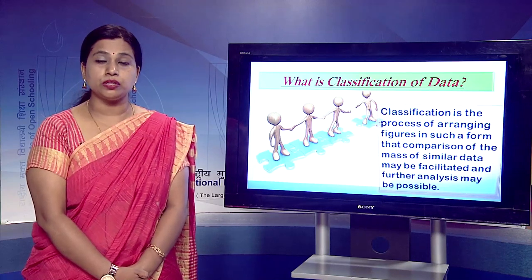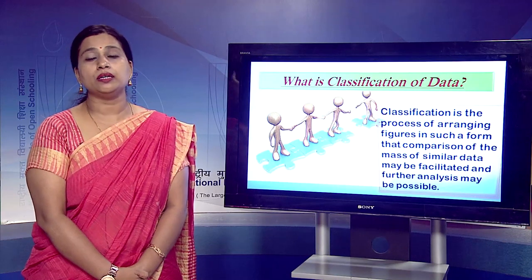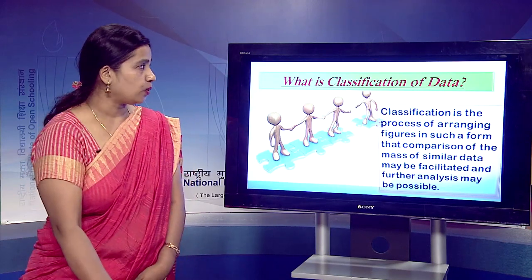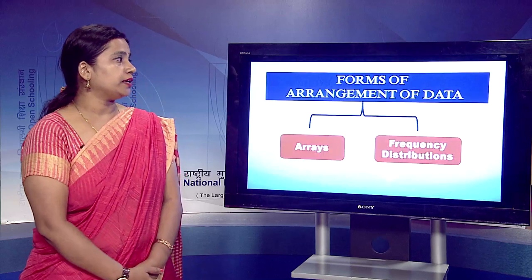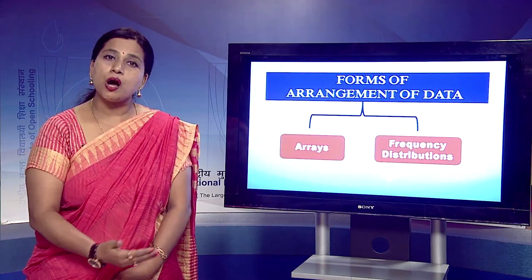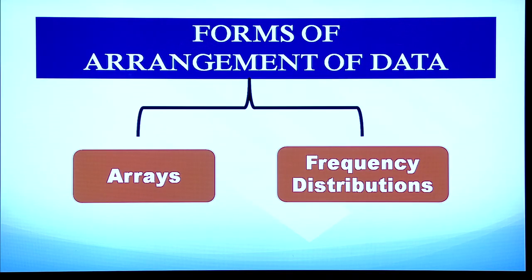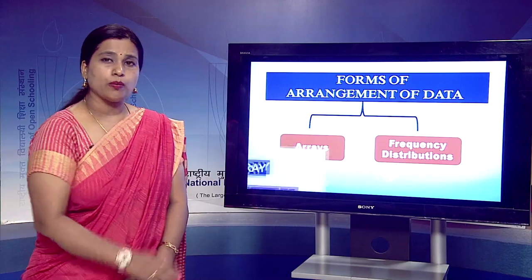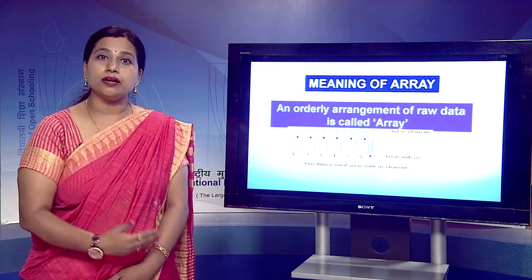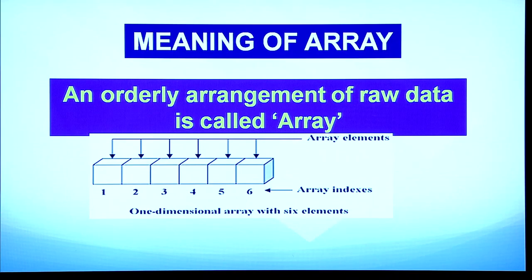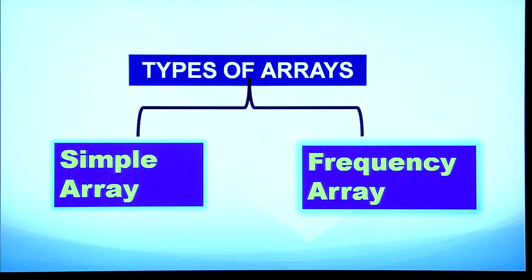Classification of data is essential; only then are we able to use data collected by primary or secondary methods. Once classification is done, we can discuss the forms of arrangement of data. Data can be arranged in two ways: first, an array; and second, frequency distribution. An array is an orderly arrangement of raw data, and it can be of two types: simple array and frequency array.